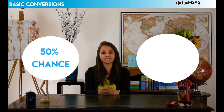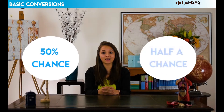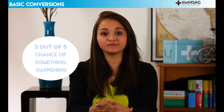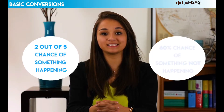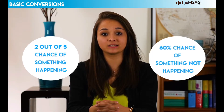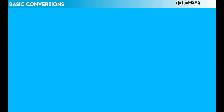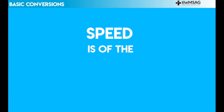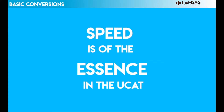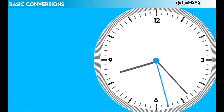You're probably perfectly aware of the fact that a 50% chance is the same as a half chance, but are you speedy enough to say that a 2 out of 5 chance of something happening is equivalent to a 60% chance of something not happening? Speed is of the essence in the UCAT, so you'll need to be quick.